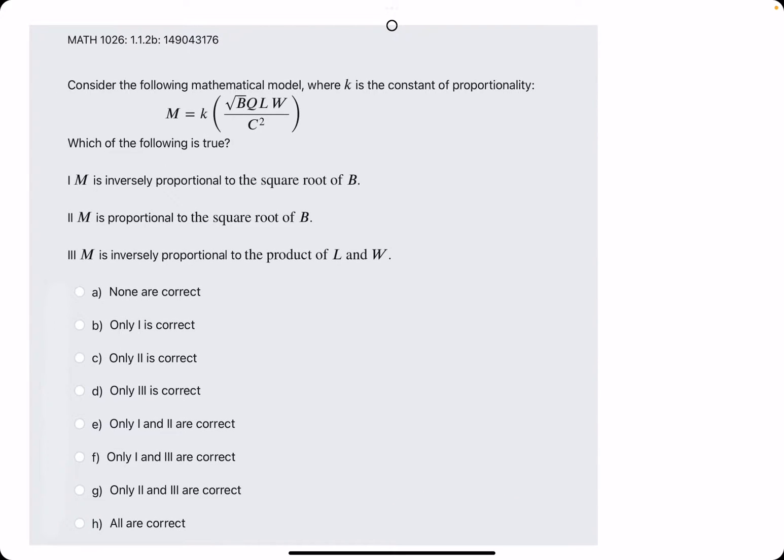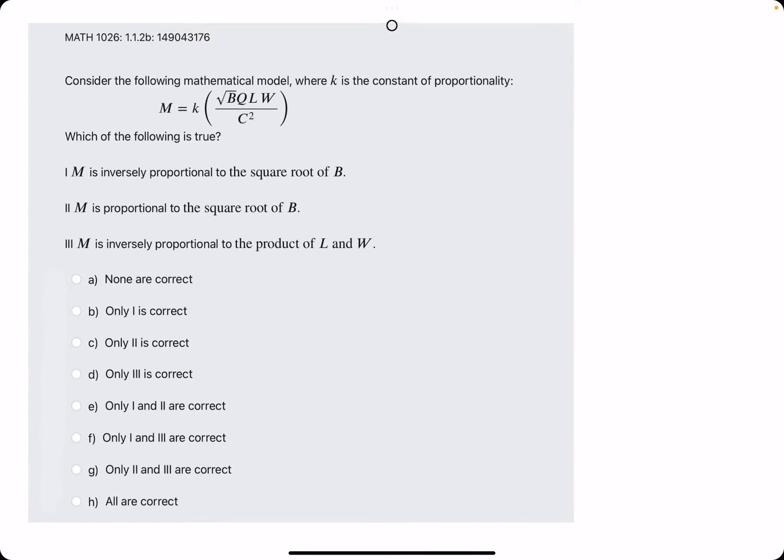Keep in mind what we've already learned. When something is inversely proportional, that means whatever they're describing should be in the denominator of the expression. Whenever something is proportional to something else, this something should be in the numerator of whatever we're looking at. So that's kind of the shortcut way to think about it.